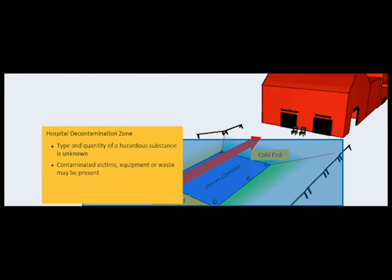The hospital decontamination zone includes any areas where the type and quantity of a hazardous substance is unknown and where contaminated victims, equipment or waste may be present. As a result, exposure risk to staff working in this zone is elevated, requiring the institution and enforcement of defensive measures, including the use of personal protective equipment.